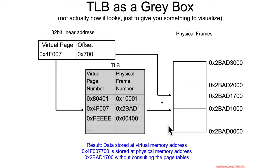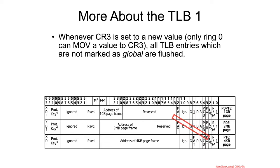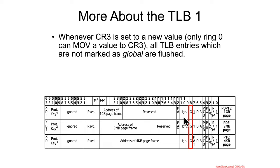A TLB is essentially a virtual page number to physical frame number lookup table. One important behavior: whenever CR3 is set to a new value — which only ring 0 can do — all TLB entries that are not marked as global are flushed. This is where the global flag finally matters: entries with the global bit set survive a context switch.